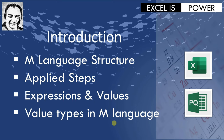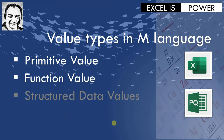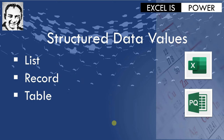When we look at the value types in M language, we need to start to dig more and look at the different types. We are going to discuss three different types. The first one will be the primitive value, and then function value. For part two, we are going to talk about the structured data values, and we'll dig into lists, records, and tables.